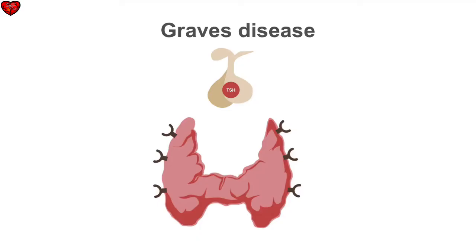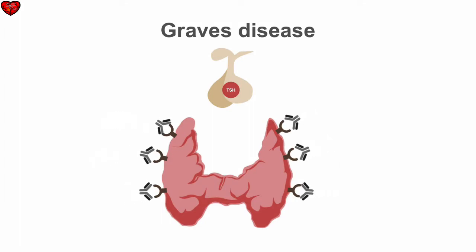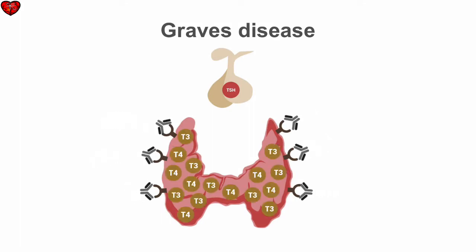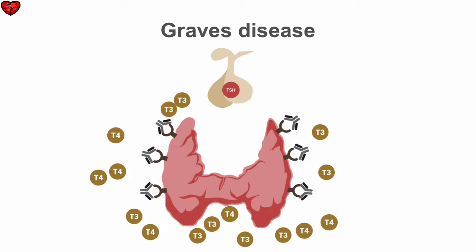Graves' disease is an autoimmune thyroid disease where patients have antibodies against the TSH receptors on the thyroid. This leads to increased production of thyroid hormone, which, when released into the blood, acts back at the level of the pituitary to inhibit TSH secretion.